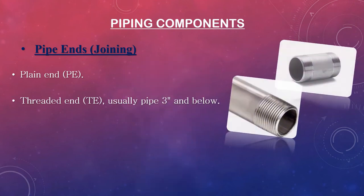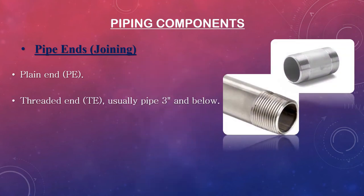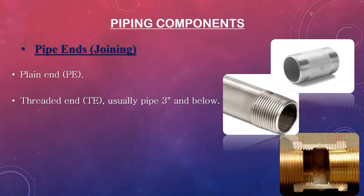Threaded ends are generally used for small diameter pipe systems, and connections are made with threaded flanges and threaded fittings. Typically used for pipes with a nominal size of 3 inches or smaller, threaded pipes allow for an excellent seal. However, connecting the threads properly is essential to avoid damaging pipes, fittings, or flanges.